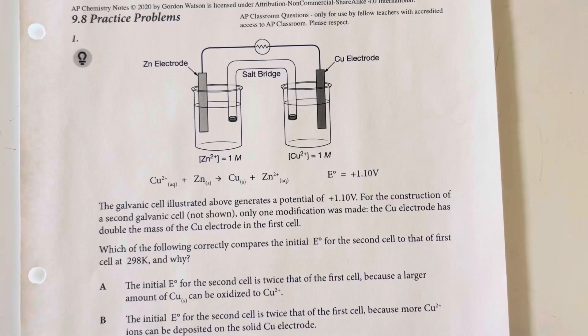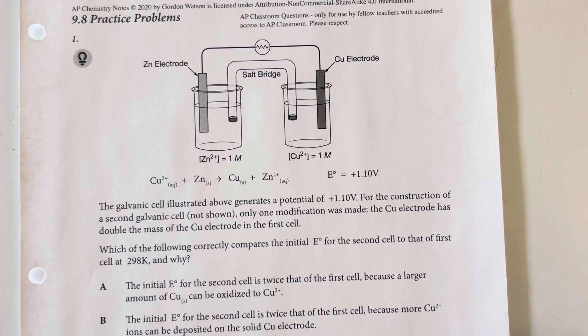9.8 practice problems. The galvanic cell illustrated above generates a potential of +1.1 volts. In the construction of the second galvanic cell, not shown, only one modification was made: the copper electrode has doubled the mass of the copper electrode in the first cell.